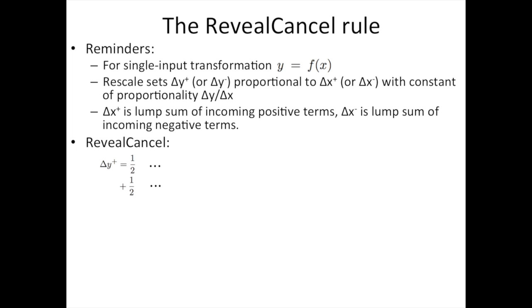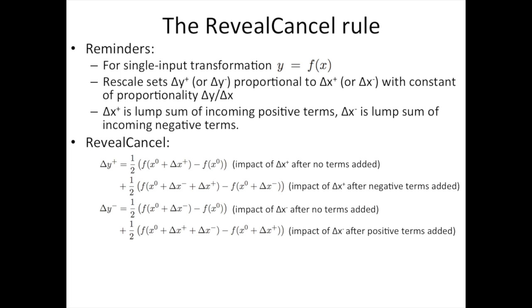In the reveal-cancel rule, rather than setting delta y plus proportionally, we are going to set it to the average of two terms. The first term is the average impact of delta x plus on the output after no other terms have been added. x naught is the reference value of x, so we just look at the impact of delta x plus when it's included on top of x naught. And the second term is the impact of delta x plus after the negative terms have been added, so we look at the impact of delta x plus when it's included on top of both the reference points and delta x minus, and analogously for delta y minus. It is the average impact of delta x minus after no terms have been added and after the positive terms have been added.